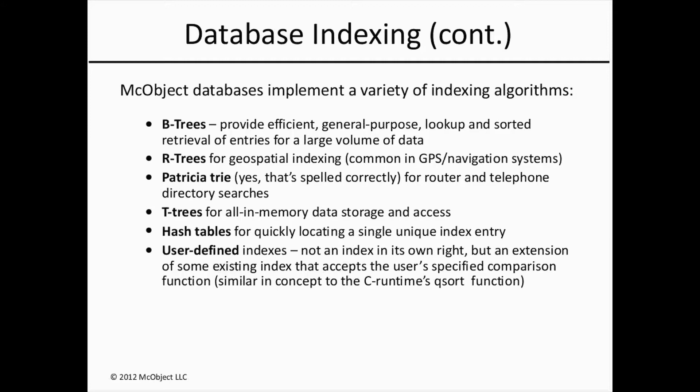We'll look at R-trees for geospatial indexing, which is common in GPS and navigation-type systems. We'll examine the Patricia tree for router and telephone directory searches — also known as a longest prefix match index. T-trees are appropriate for all-in-memory data storage and access. Whereas the design goal of a B-tree is to minimize I/O, the design goal of a T-tree is to minimize memory use.